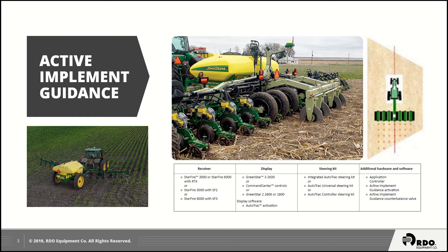Compatibility wise with receivers, we can use either SF 3000 or 6000, and they have to be at least SF2, or SF3 on a 6000. Display compatibility again — we have multiple display compatibility: GS3, GS2, along with Gen 4.